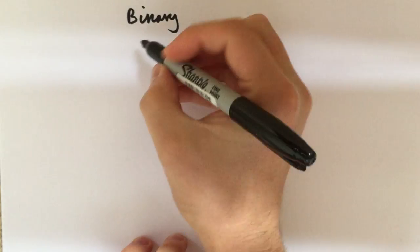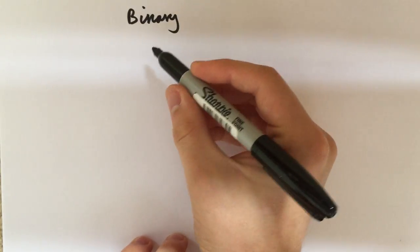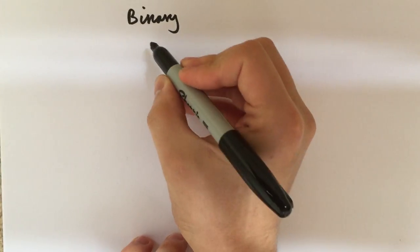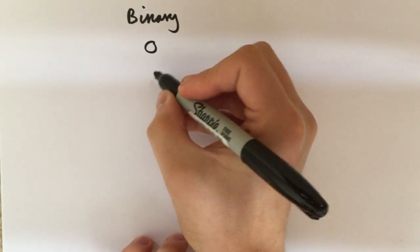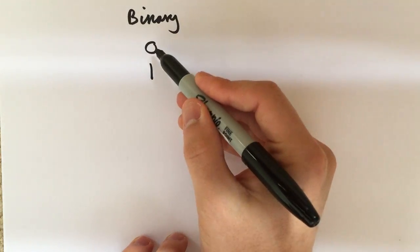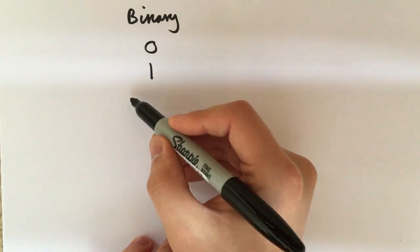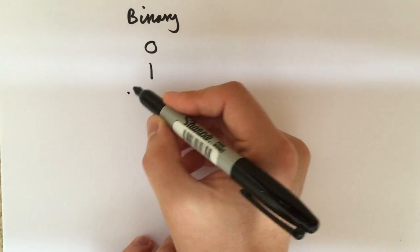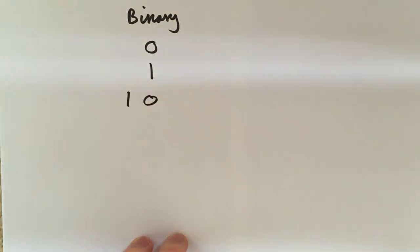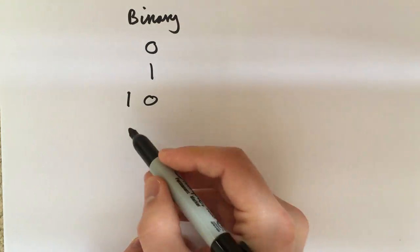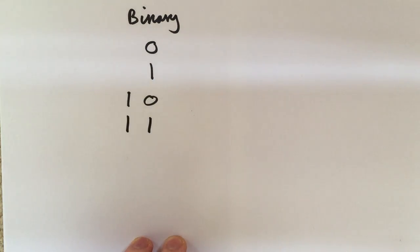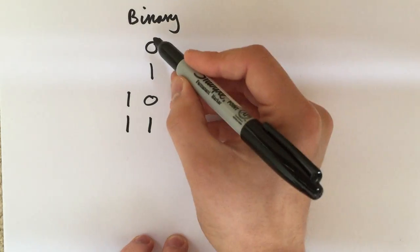Binary is base 2, which simply means it only has two symbols to represent values — the character zero and the character one. This means you start with zero, change it to one, and once you've reached one you need to start a new column. That next value would be represented as one-zero, then one-one, and so on. It's just the idea that we've only got two different characters that we can store.